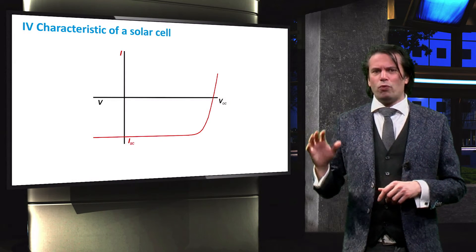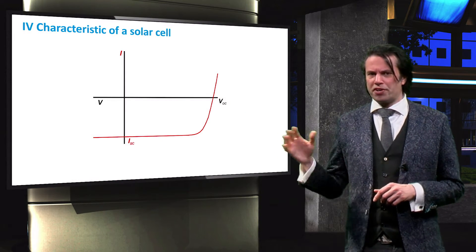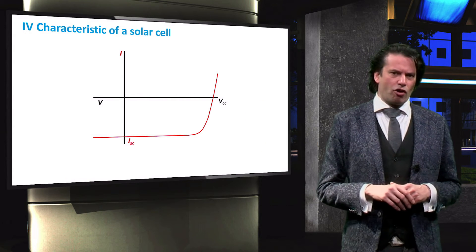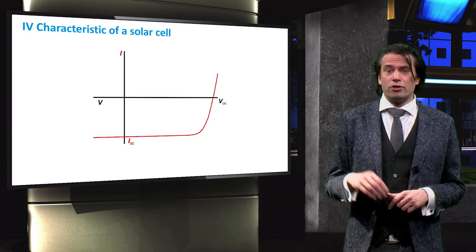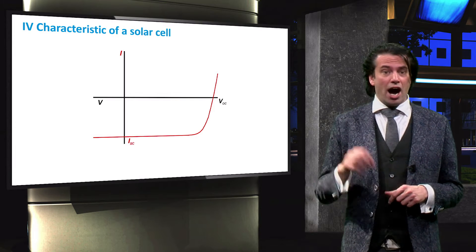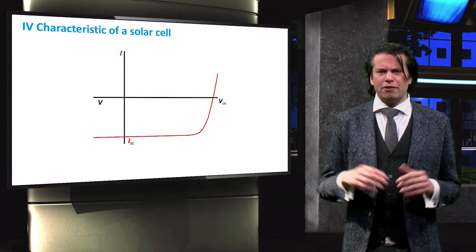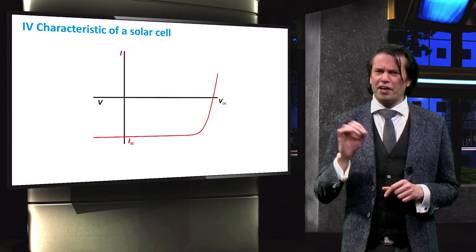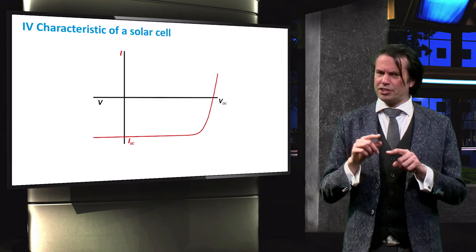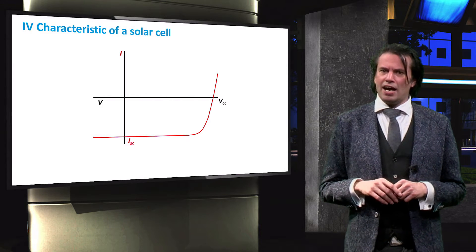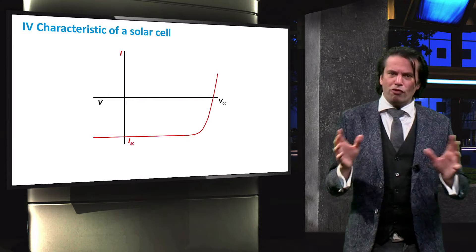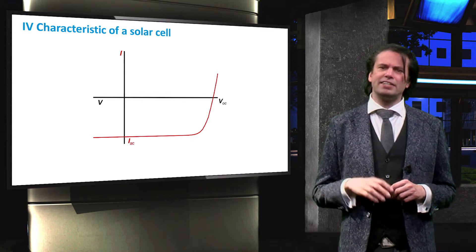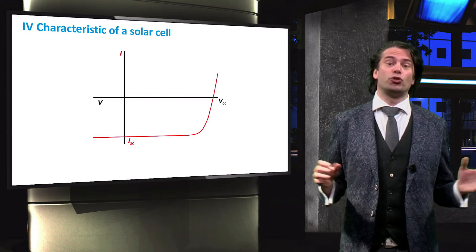Let's start with what we learned in the previous video. Here is the IV characteristic of a solar cell. We can note the VOC and the ISC that we described before. We can notice a few things about this plot: there is an exponential characteristic and it is offset negatively somehow. So how can we represent this as a circuit model?